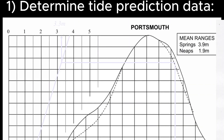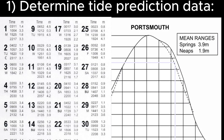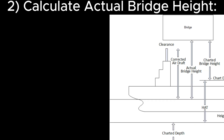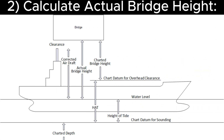Determine tide prediction data by consulting the relevant tide tables to find the height of tide and the chart datum for overhead clearance heights, as defined in Step 1. Then calculate the actual bridge height — the distance measured from the underside of the bridge down to the water level for a given time on a given day. To find it, subtract the height of tide from the highest astronomical tide and add the result to the charted bridge height.